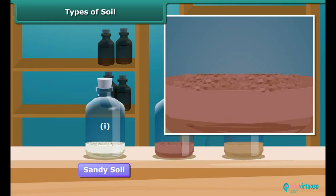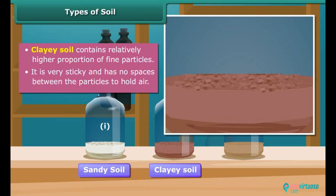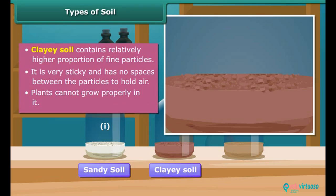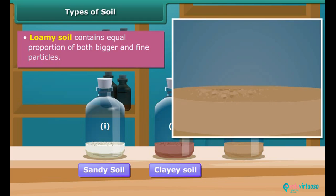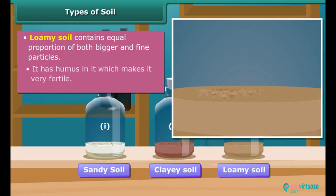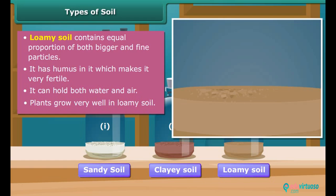The second sample contains a relatively higher proportion of fine particles, so it is a clay soil. It is very sticky and has no spaces between the particles to hold air, therefore plants cannot grow properly in it. The third sample contains equal proportions of both bigger and fine particles, so it is a loamy soil. Loamy soil has humus in it which makes it fertile, and it can hold both water and air, therefore plants grow very well in loamy soil.